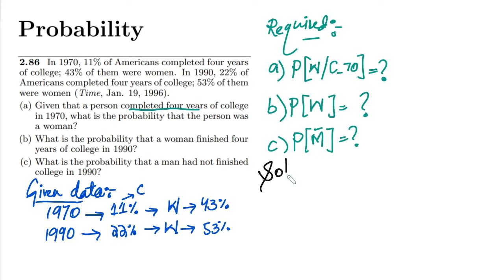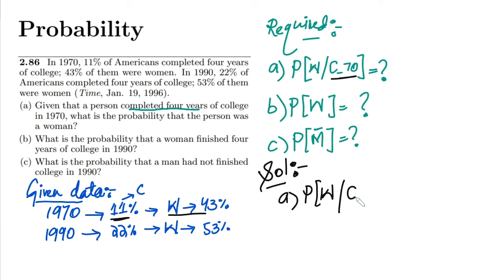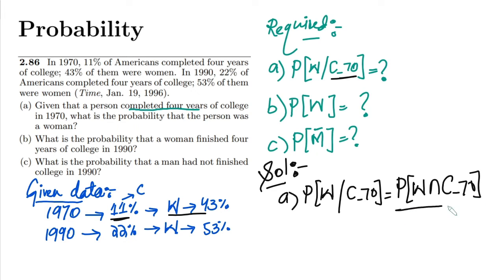For part A, this is a conditional probability. The formula is: probability of woman given college completed in 1970 equals the probability that the person is a woman AND completed college in 1970, divided by the probability that a college degree was completed in 1970.